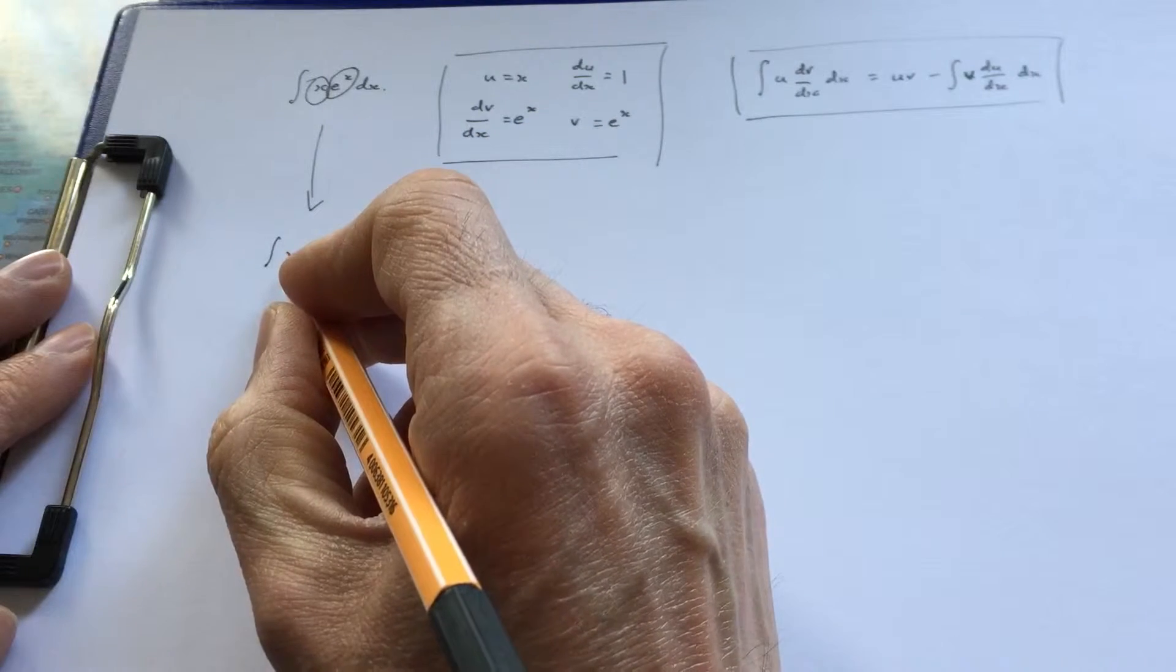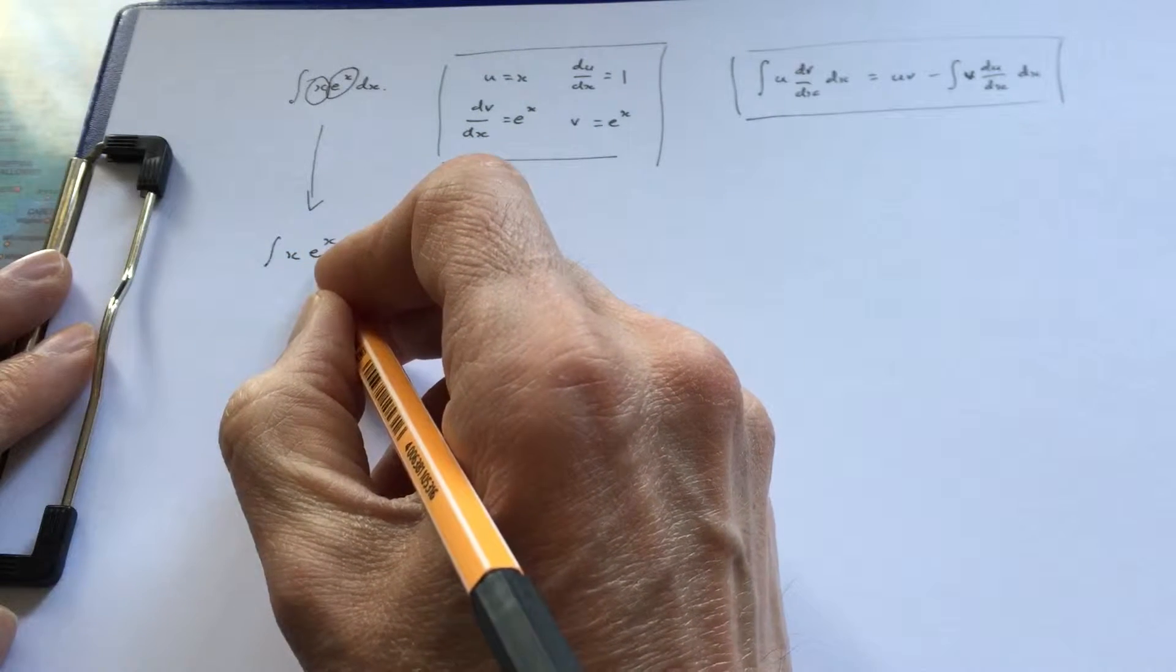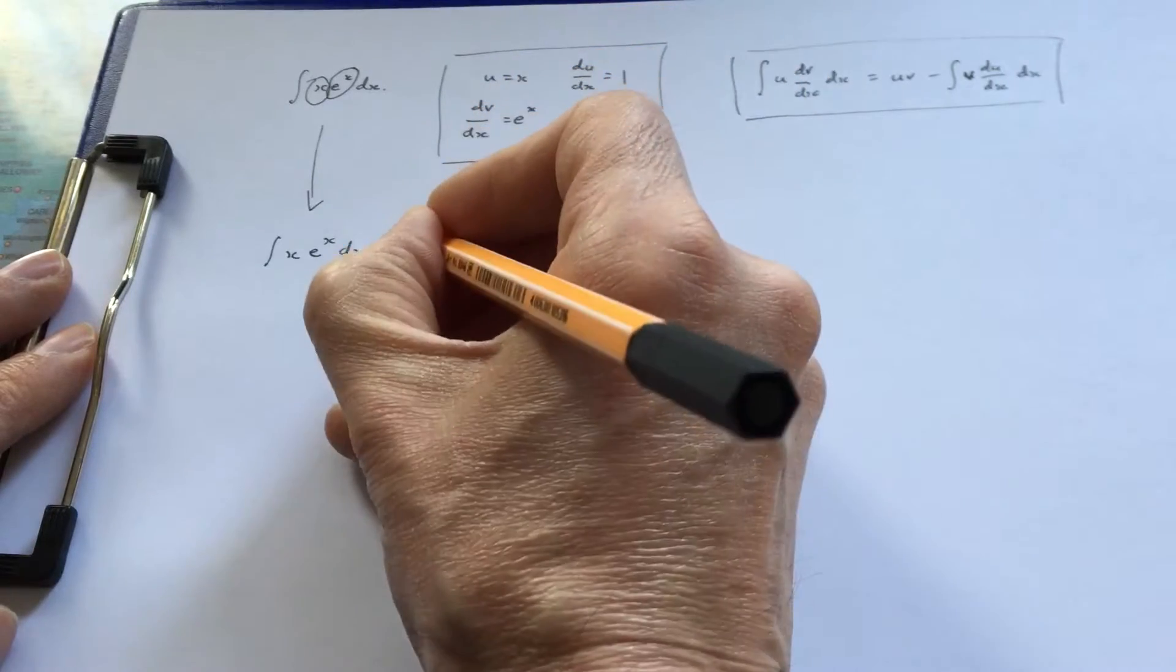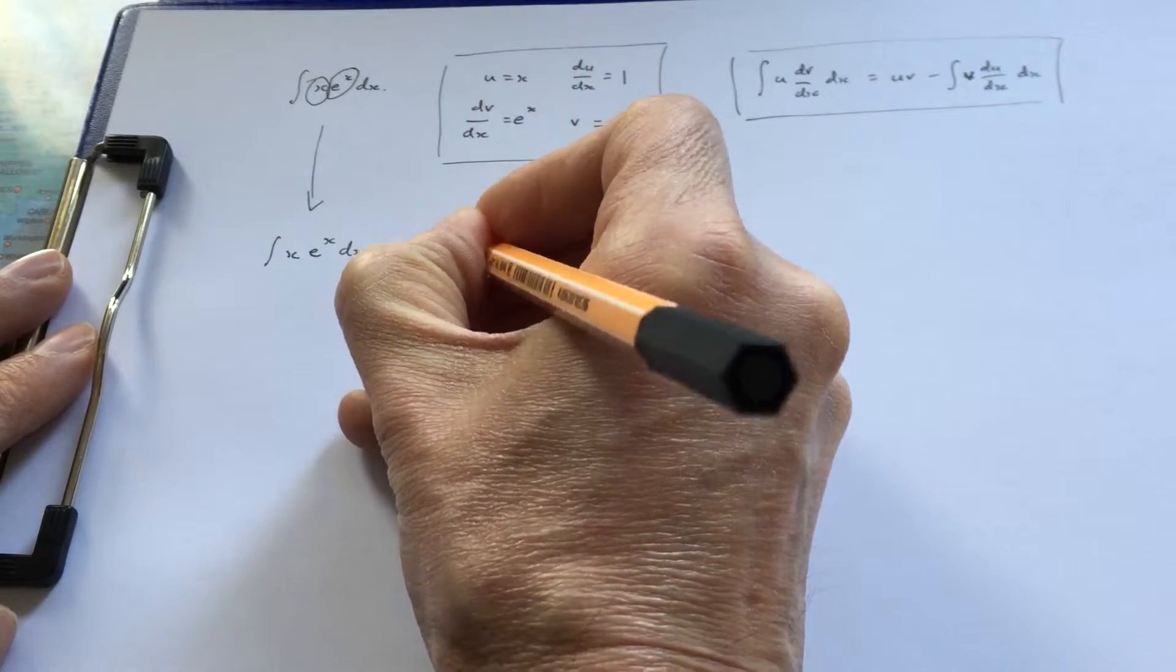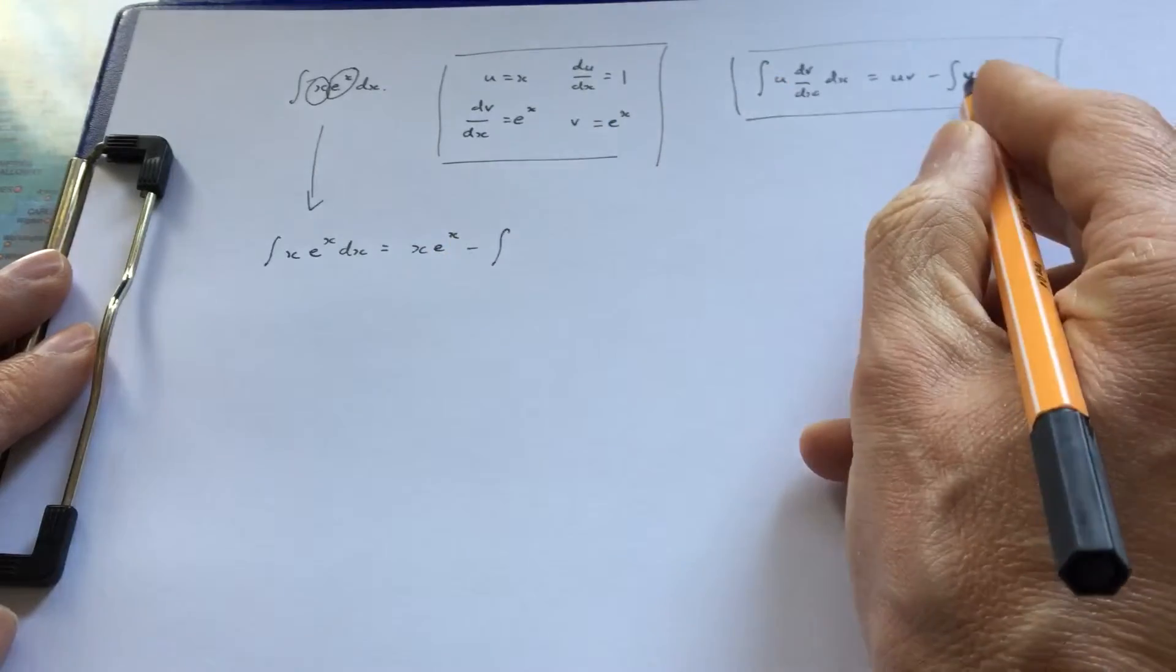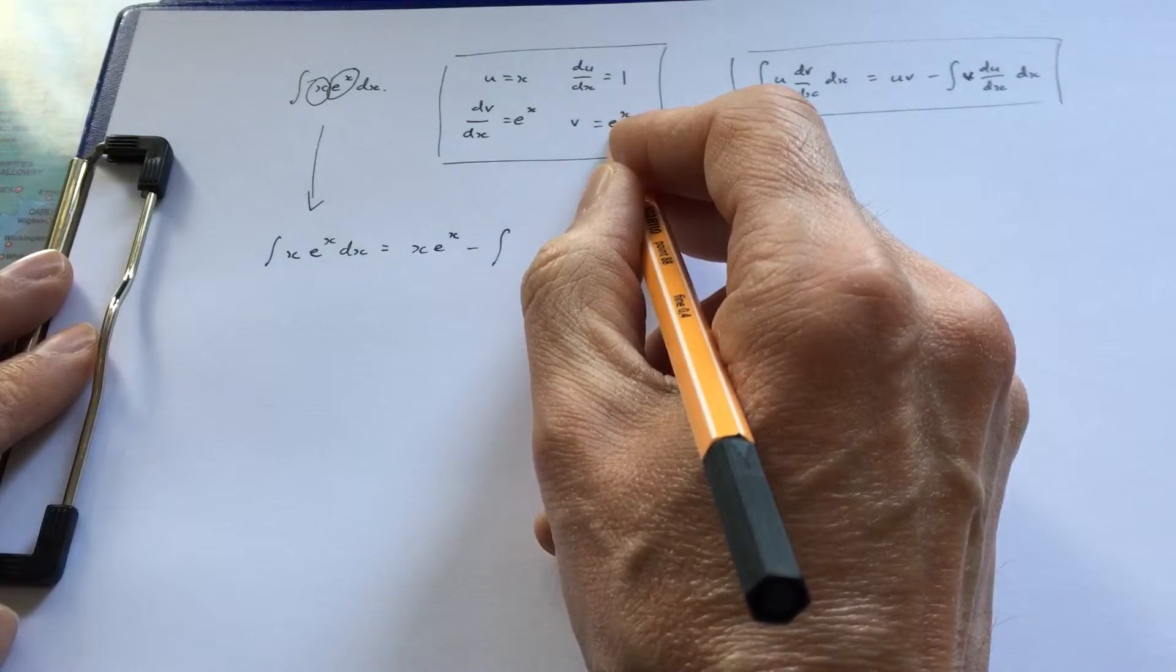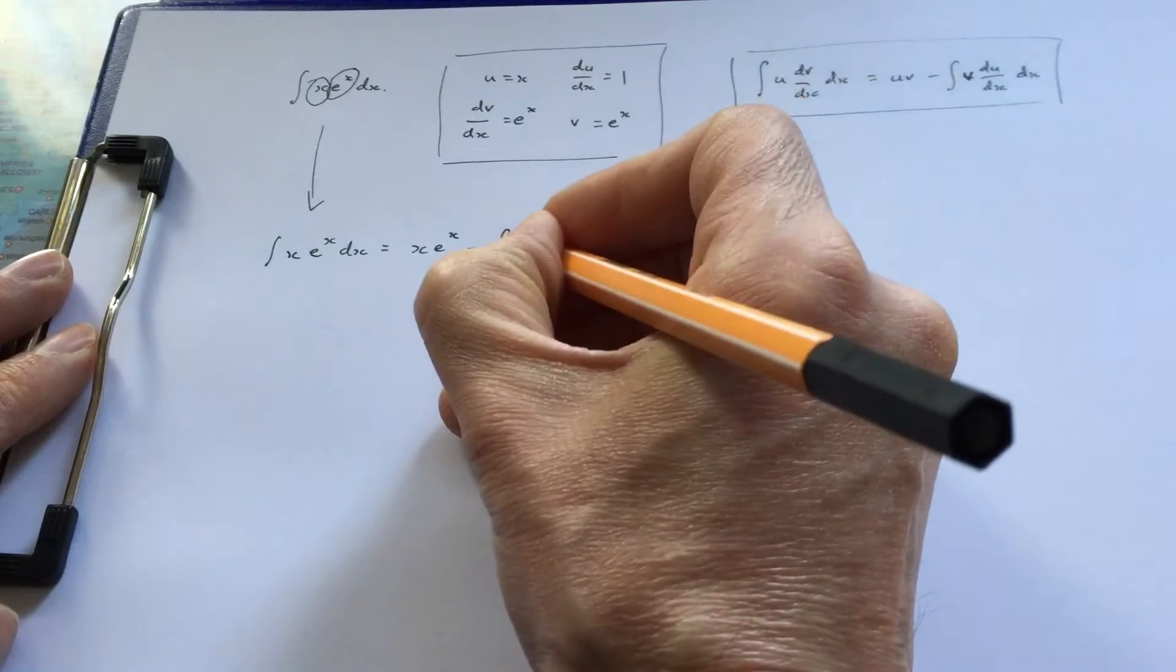u dv/dx equals uv: x times e^x minus the integral of v du/dx. That's e^x times 1, which is just e^x.